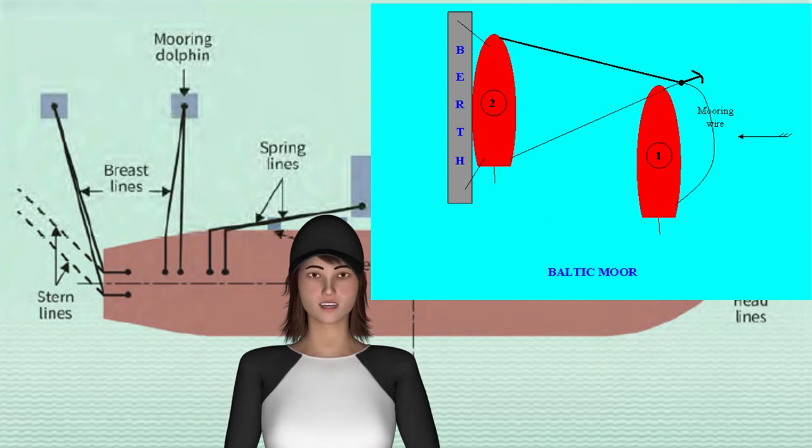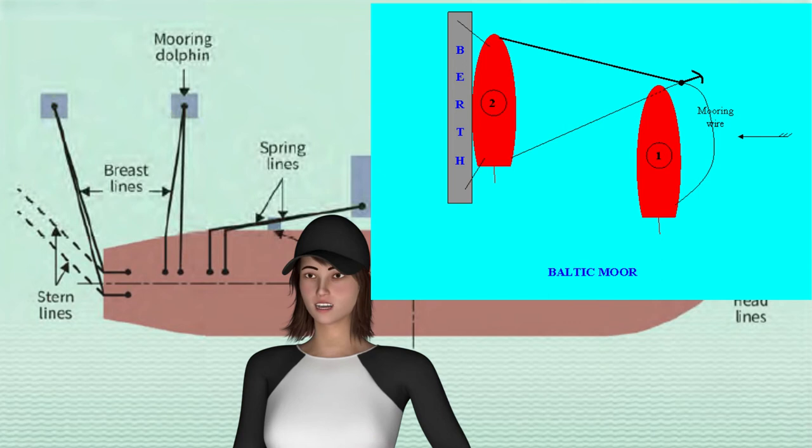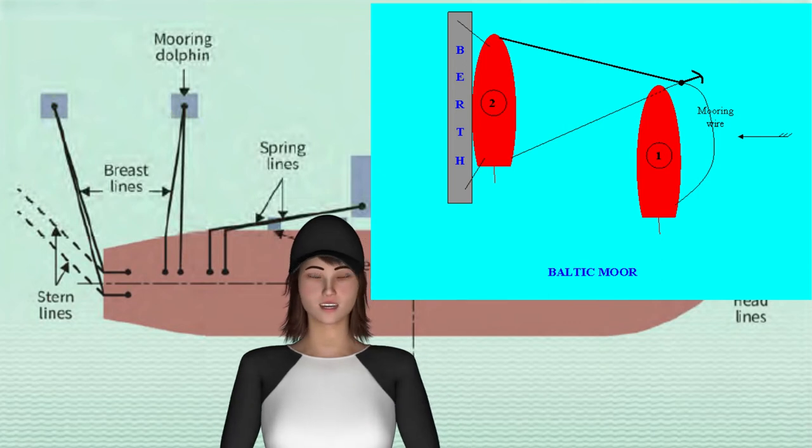When the stem is abreast the position of the quay where the bridge will be positioned, the anchor is let go. The vessel is still on headway.